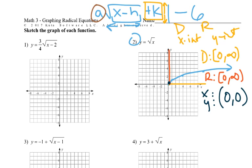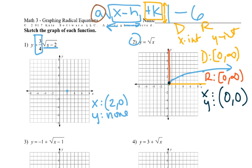If we look at number 1, thinking about that parent graph, we've got to subtract 2 on the inside, so we're going to shift everything to the right 2. We would start at (2,0), so the x-intercept is (2,0). Y-intercept: there's none. Then this 3/4 coefficient is going to cut it by a fourth — so instead of (1,1), it would be (1, 3/4), right there.